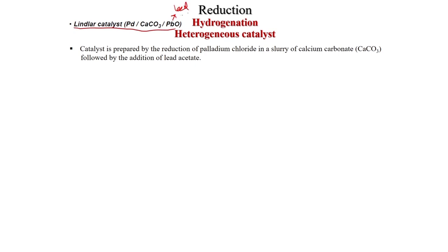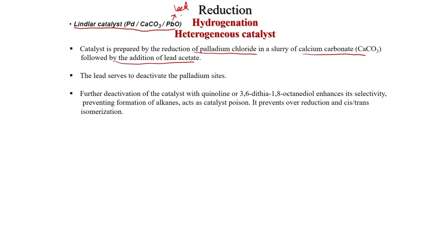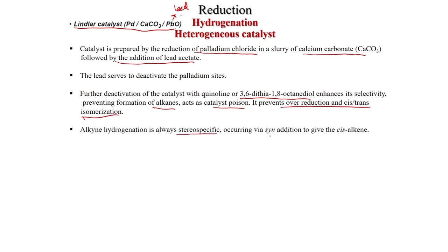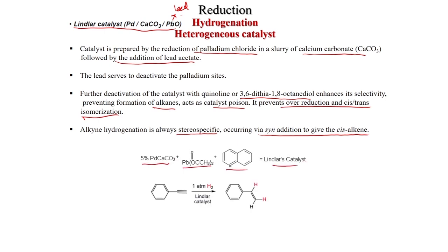First we will discuss Lindlar's catalyst: palladium on calcium carbonate with lead. It is prepared by reduction of palladium chloride in a slurry of calcium carbonate, followed by addition of lead acetate. Lead serves to deactivate the palladium sites. Further deactivation with quinoline or 3,6-diethyl-1,8-octanediol enhances selectivity, preventing formation of alkanes. It acts as a catalyst poison preventing over-reduction and cis-trans isomerization. Alkyne hydrogenation with Lindlar's catalyst is always stereospecific, occurring by syn addition to give the cis alkene.